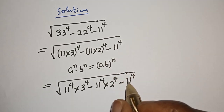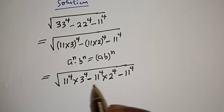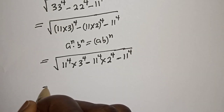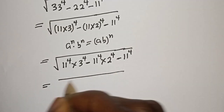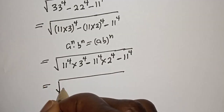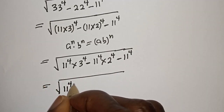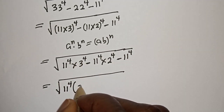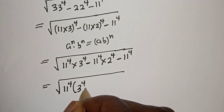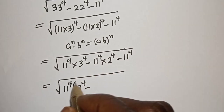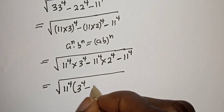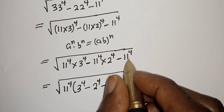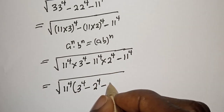We can see that 11 raised to power 4 is common. Equal to square root of 11 raised to power 4 times: if you divide each term by 11 raised to power 4, we have 3 raised to power 4, minus 2 raised to power 4, minus 1.